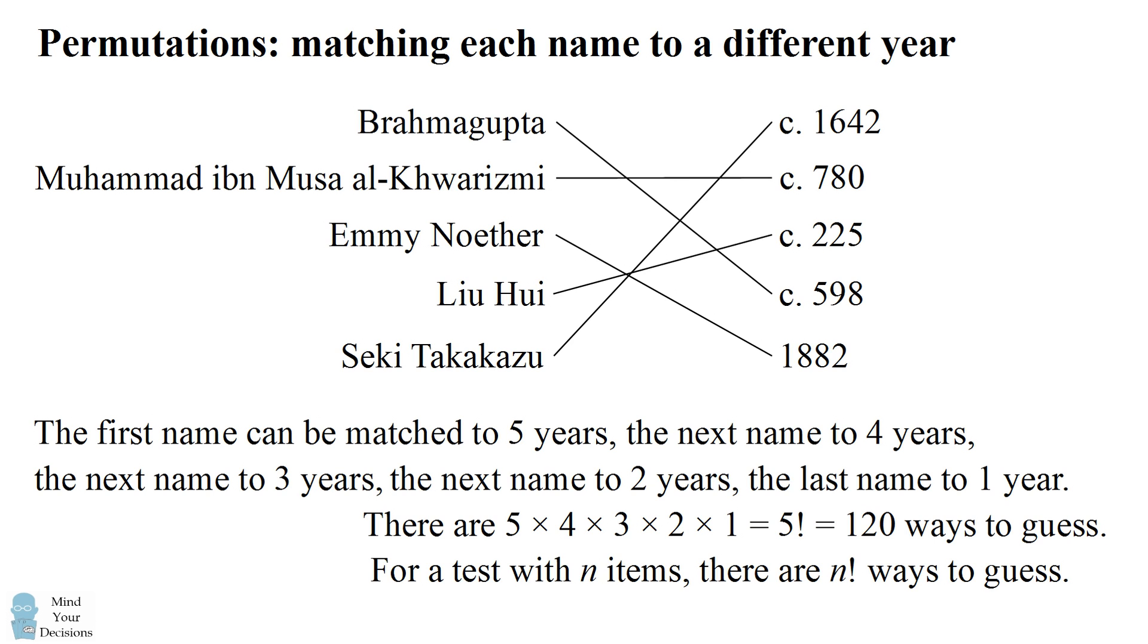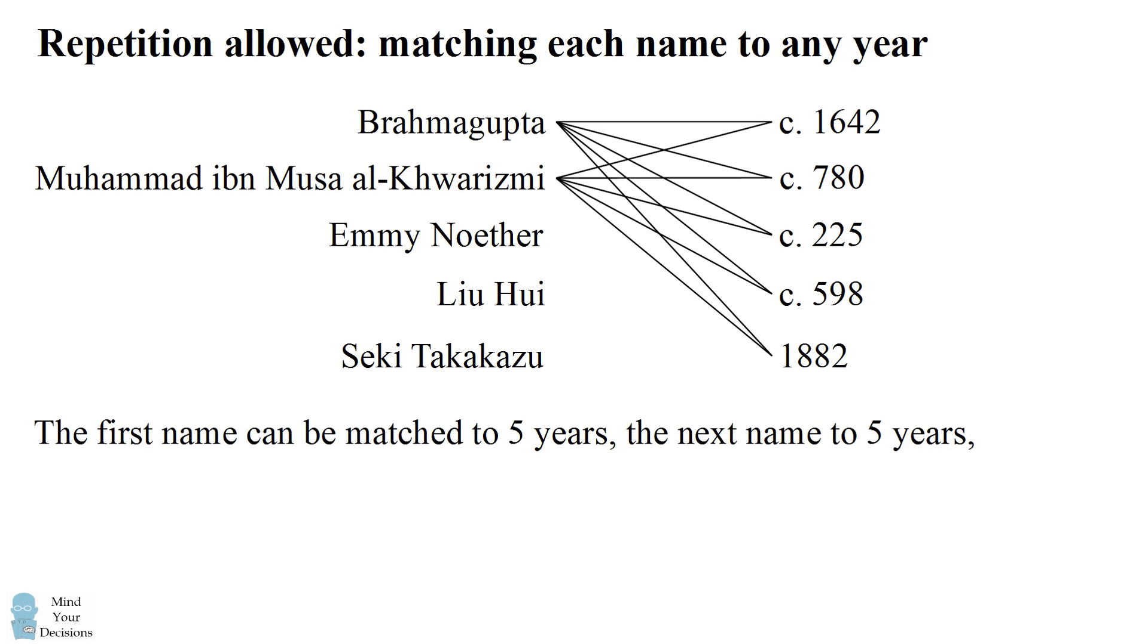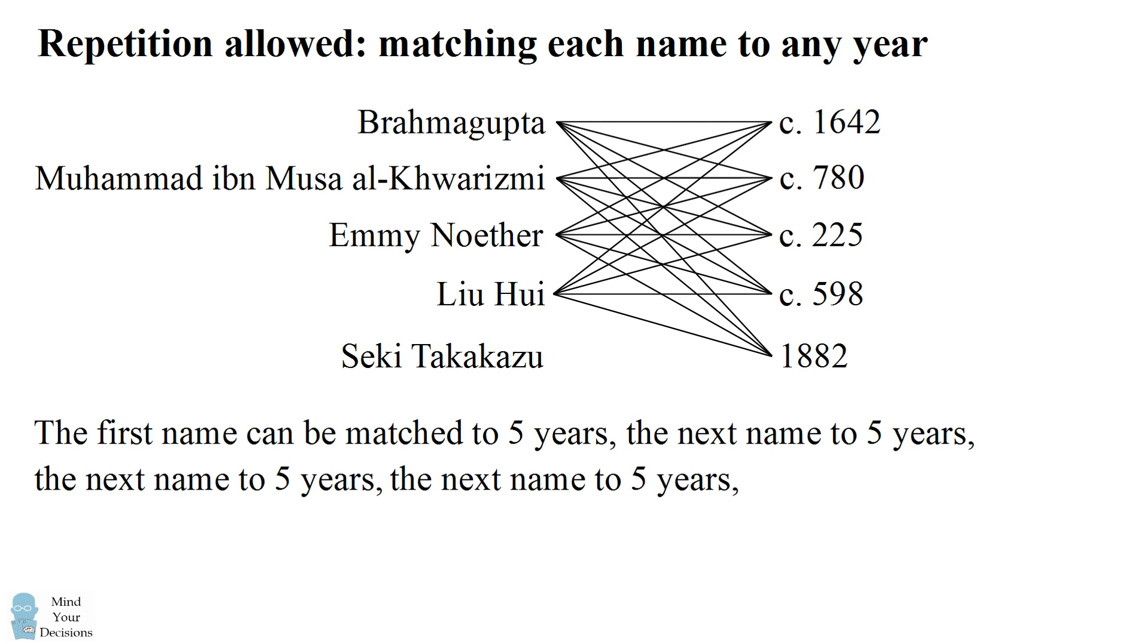And in fact, the number of ways you could guess is actually even more. Suppose that you allow repetition, where you say that you could match multiple names to the same year. How many different ways are there to guess now? Well, the first name can be matched to any of the five years, the next name can be matched to any of the five years, and so on. Now every single name can be matched to any of the five years.